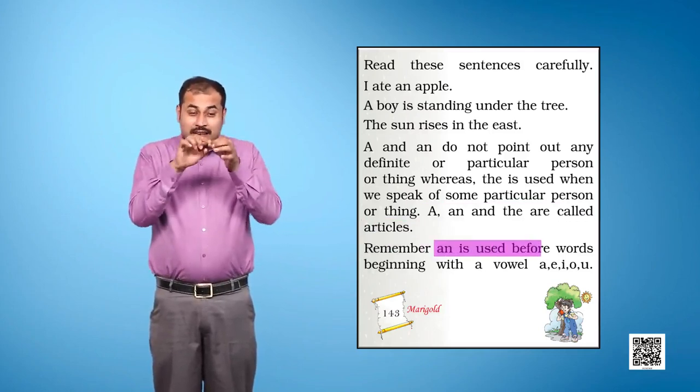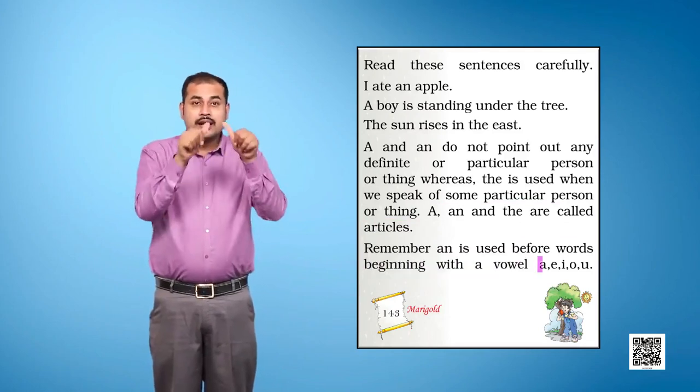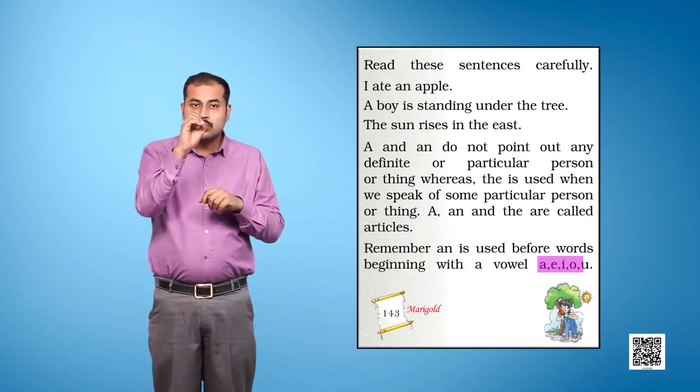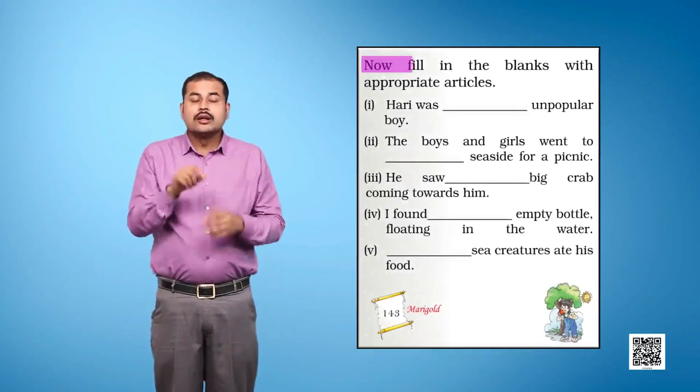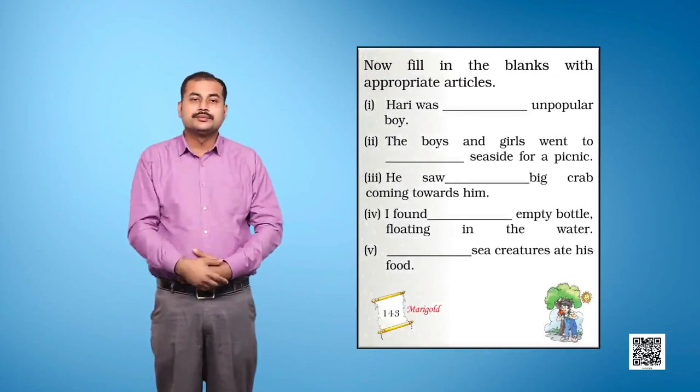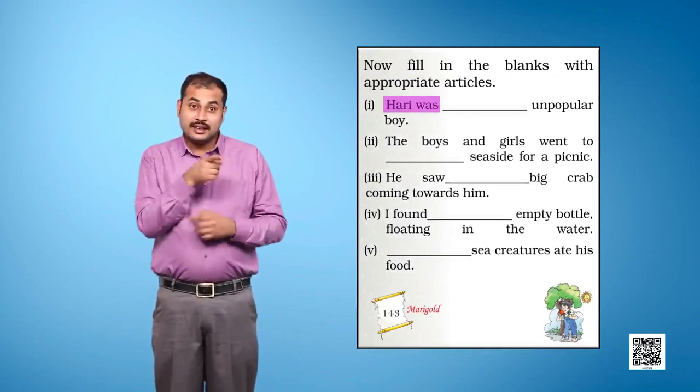Remember, An is used before words beginning with a vowel: A, E, I, O, U. Now, fill in the blanks with appropriate articles.